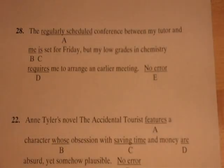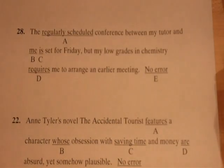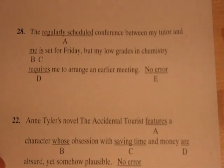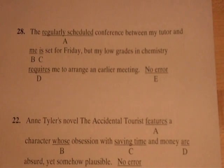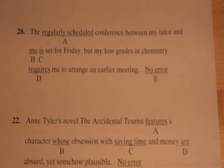Just like the math questions, these are organized by difficulty, so the actual question number matters. Let's look at the first one. It says: 'The regularly scheduled conference between my tutor and me is set for Friday, but my low grades in chemistry requires me to arrange an earlier meeting.' I can look at this and say I see an error or I don't. If I don't see an error right off the bat, the trick is to look at each answer choice, ask what part of speech it is, then ask what rules apply to that part of speech.